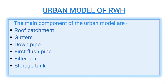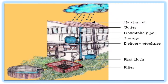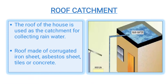Next, the urban model of rainwater harvesting consists of many components like roof catchment, gutters, down pipe, first flush pipe, filter unit, and storage tank. We will see them one by one. In this picture we can see the catchment. The roof of the house is used as the catchment for collecting rainwater. The gutter is made of corrugated iron sheet, asphalt sheet, tiles, or concrete.